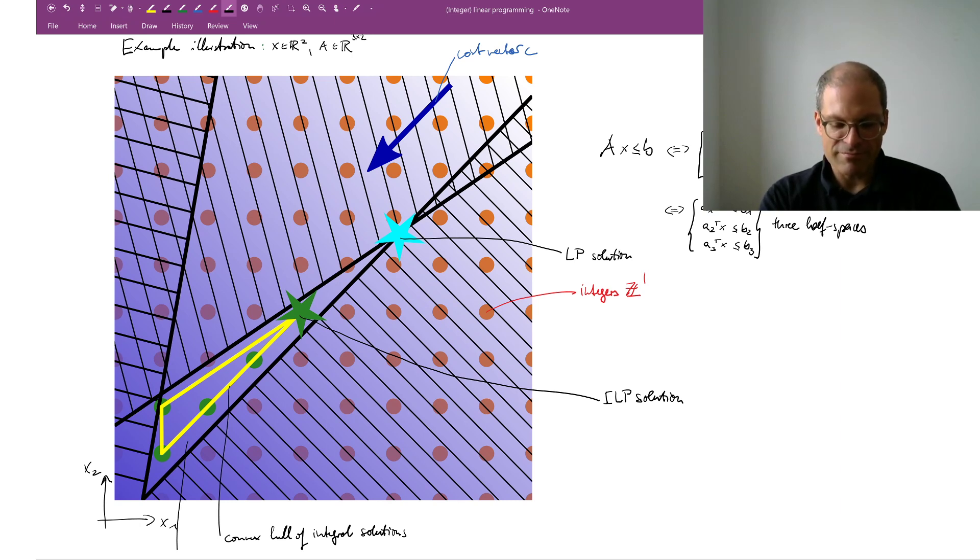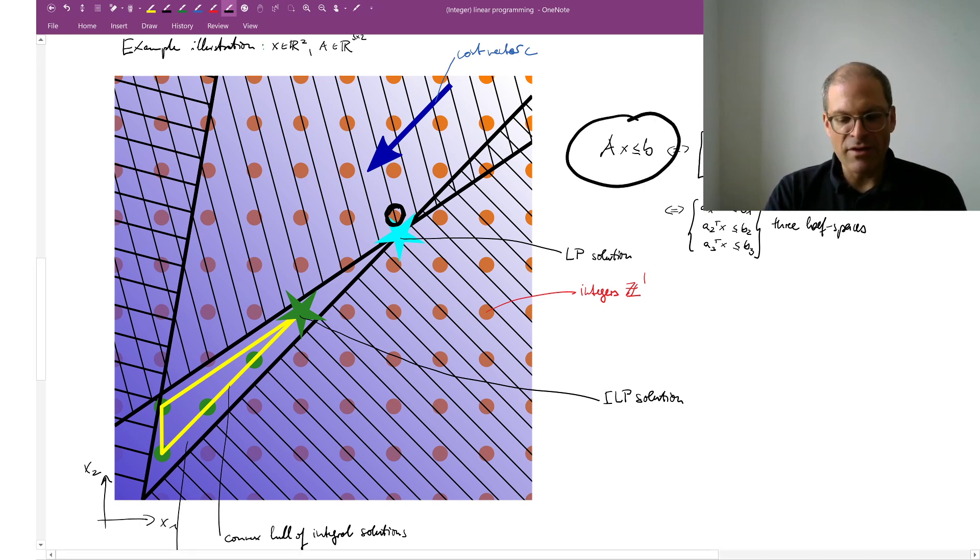But the difficulty of this linear programming stems from the fact that simple rounding procedures do not work well. So let me explain. The LP solution we said was given by the location of the star. Naively you might think, okay, so I'm looking for an integer solution, I'm going to round this solution to the closest integer. If I do that, the closest integer I think will be this one here, but unfortunately it does not lie in the feasible region. So it is integer, yes, but it violates this constraint here.